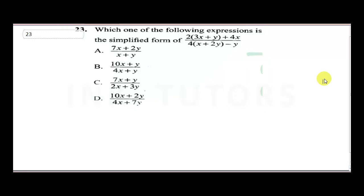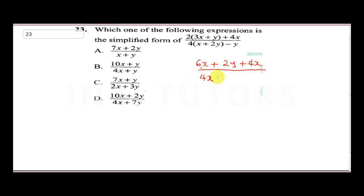The next question asks which expression is the simplified form of a given equation. To simplify, we expand: 2 times 3x gives 6x, plus 2 times y gives 2y, plus 4x — all divided by 4 times x is 4x, plus 4 times 2y gives 8y.